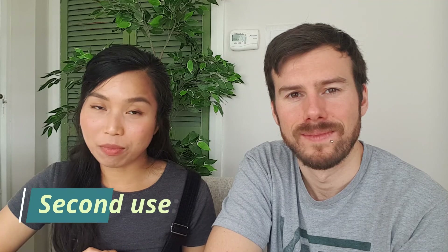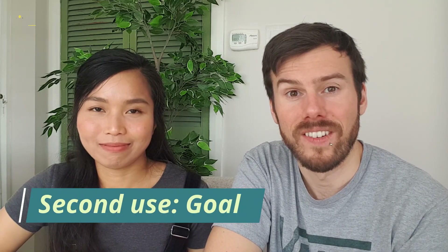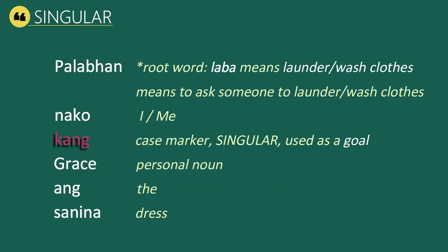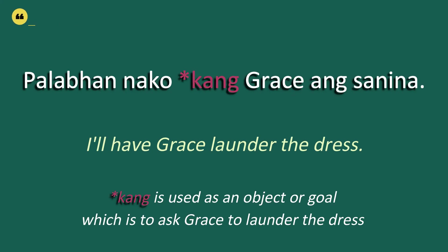The second function of the oblique case marker is for goal or object. Our first example in singular form is: Palabhan nako kang Grace ang sanina, which means 'I'll have Grace launder the dress.' Palabhan comes from the root word laba meaning 'to wash clothes,' in future tense. Nako means 'I' or 'me,' kang is the subject marker for singular, Grace is the person's name, and sanina means dress.